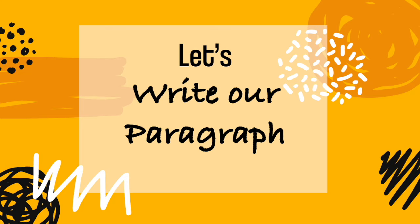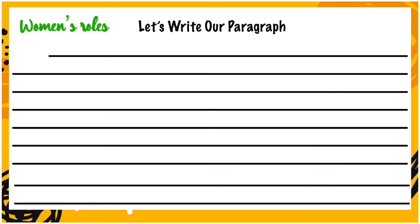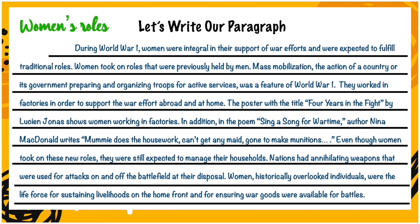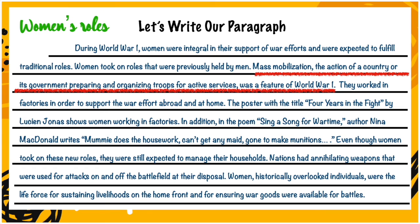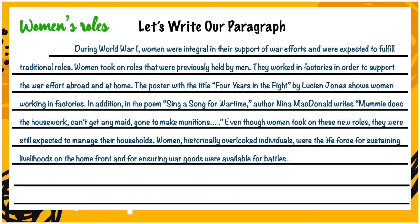Let's look at how we can eliminate irrelevant sentences in our paragraph writing. There are sentences in this paragraph that are not supporting the topic sentence. Pause here to read this text. I found them. 'Mass mobilization — the action of a country or its government preparing and organizing troops for active service — was a feature of World War One.' This does not fit in this paragraph; it is irrelevant. Also: 'Nations had annihilating weapons that were used for attacks on and off the battlefield at their disposal.' These two sentences don't support the topic sentence, so they're irrelevant to this specific paragraph. Here's the paragraph without those two sentences — every sentence is now related to our topic sentence.